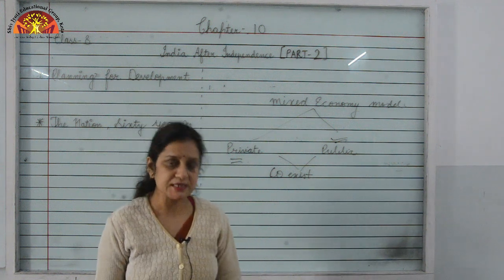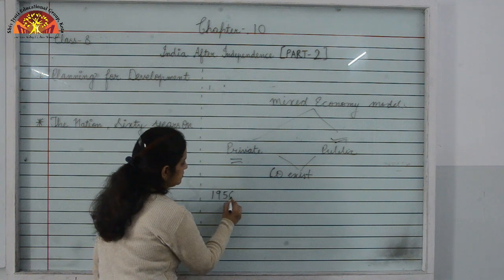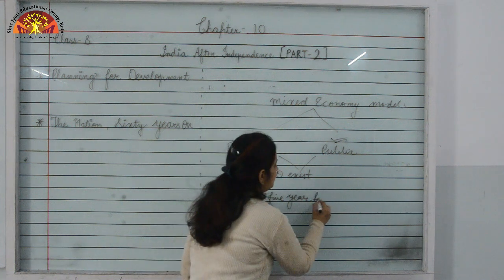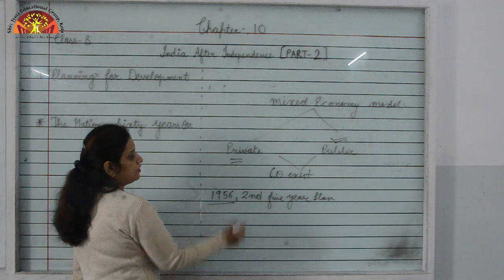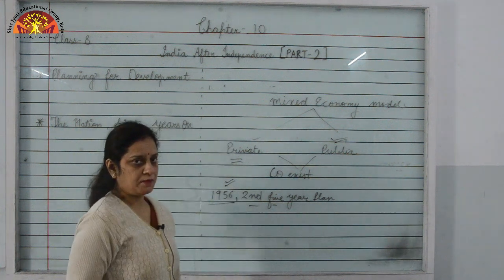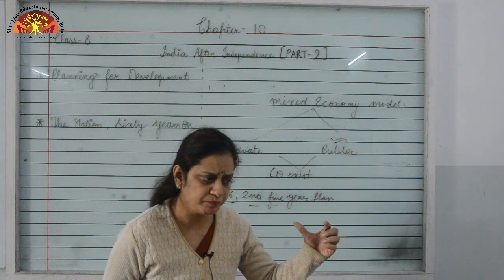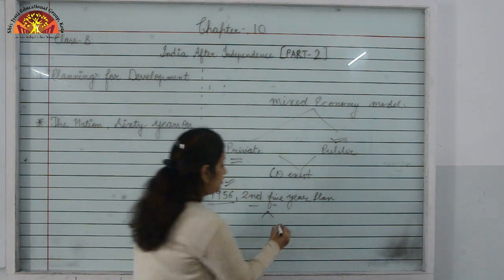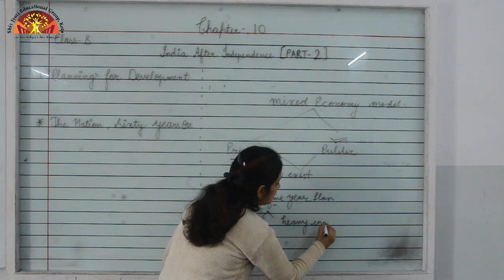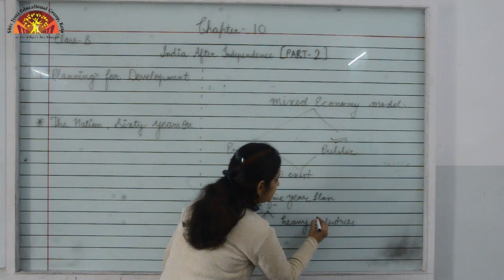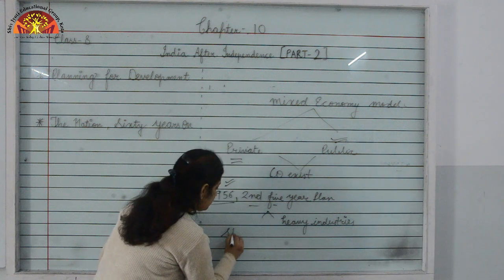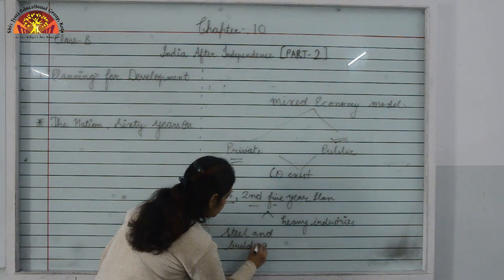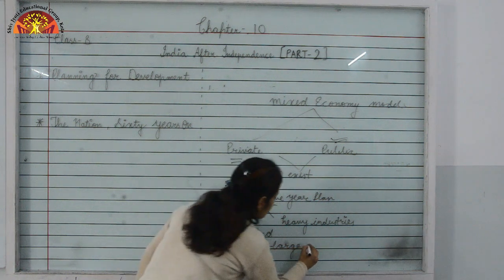In 1956, the Second Five-Year Plan was formulated. Prime Minister Jawaharlal Nehru was a very big supporter of the Planning Commission and the planning process. The Second Five-Year Plan focused mainly on the development of heavy industries, steel, and building large dams.